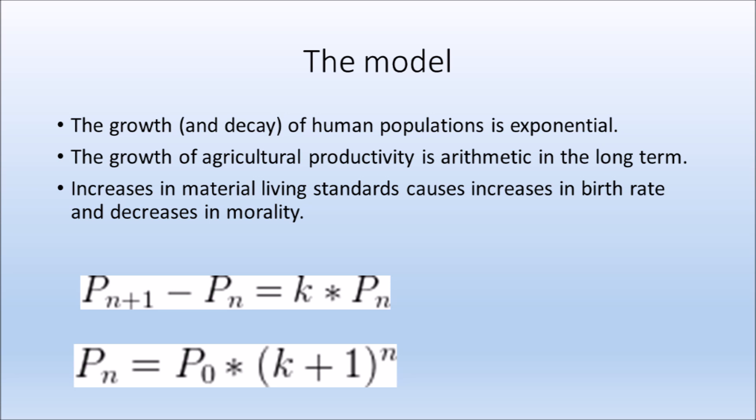The first postulate is the least controversial and stems from the distributive nature of reproduction. Consequently, the population's growth is proportional to the current size of the population, with the proportionality constant being the yearly birth rate minus the death rate, called K. This is the basic description of a geometric progression, which assumes a constant K.